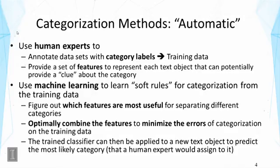Machine learning methods are more automatic — though I put 'automatic' in quotation marks because they're not completely automatic; they still require manual work. Specifically, human experts must help in two ways. First, they must annotate datasets with category labels — telling the computer which documents receive which categories. This is called training data. Second, human experts also need to provide a set of features to represent each text object. A natural choice is words, using each word as a feature, though more sophisticated features like phrases, POS tags, or syntactic structures are also possible.